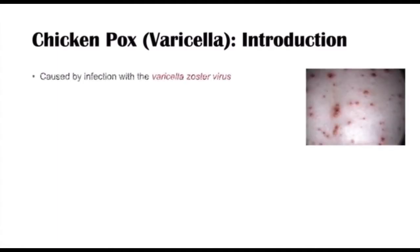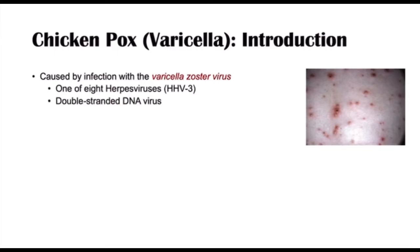Chickenpox, as many of us know, is a very common condition that is caused by an infection with the varicella zoster virus. Varicella zoster virus is one of eight herpes viruses, and it's actually human herpes virus three. Varicella zoster virus is a double-stranded DNA virus, and the way this infects an individual is by gaining entry into nasopharyngeal tissue, eventually leading to viremia, or virus in the blood.